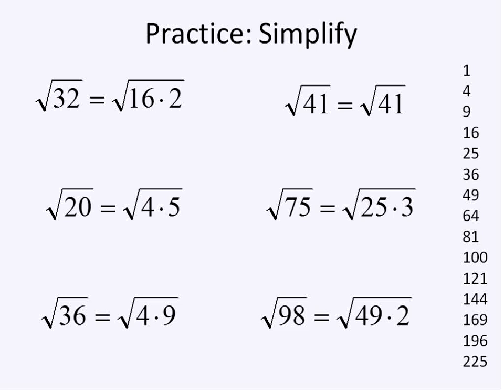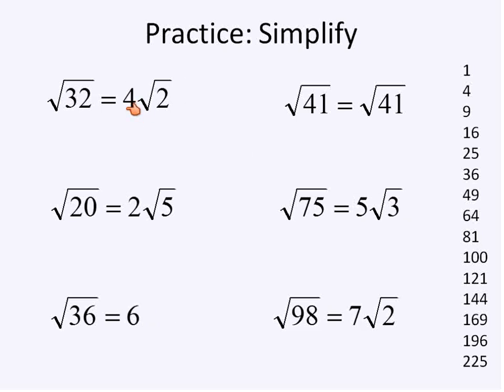We can simplify them one step further by, again, taking the square root of 16 and making that into 4. The square root of 4 was 2. The square root of 36 is 6. And this is how we would simplify all those answers. If you were able to do that, then you should feel pretty confident about simplifying radicals. You should feel pretty good about it.